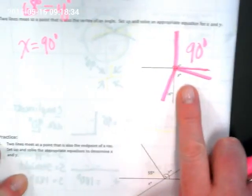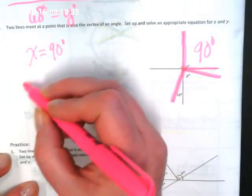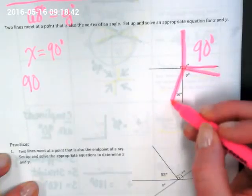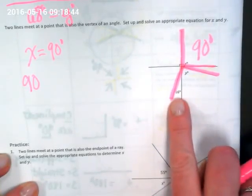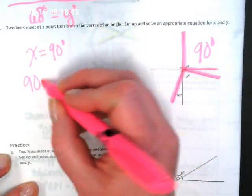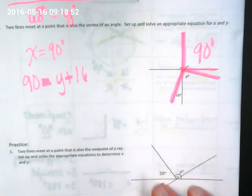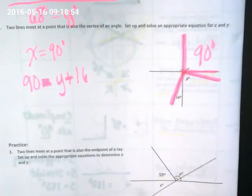But what about Y? How can we set up an equation to find Y? Well, if we know that this is 90 degrees, and it's put together by this angle that's 16 and this, we can do 90 equals Y plus 16, and solve it in a similar way.